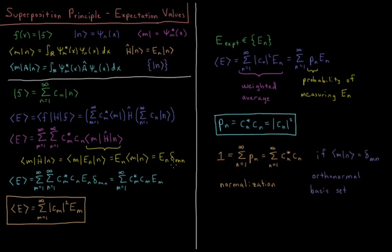This is represented by the Kronecker delta, which is 1 when m equals n and 0 when it does not. Substituting this result in, our average energy expectation value is a double sum over m and n of c_m star c_n times E_n times the Kronecker delta delta_mn. Performing the inner sum over n, the Kronecker delta is 0 for every value except where m equals n, so c_n becomes c_m, E_n becomes E_m, and the Kronecker delta becomes 1. Everything else cancels out.